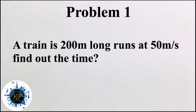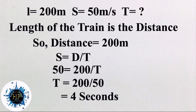Question 1: A train is 200 meters long and runs at 50 meters per second. Find the time. The length of the train is the distance (200 m) and the speed is given as 50 m/s. Using S = D/T: 50 = 200 ÷ T, so T = 200/50 = 4 seconds. The answer is 4 seconds.